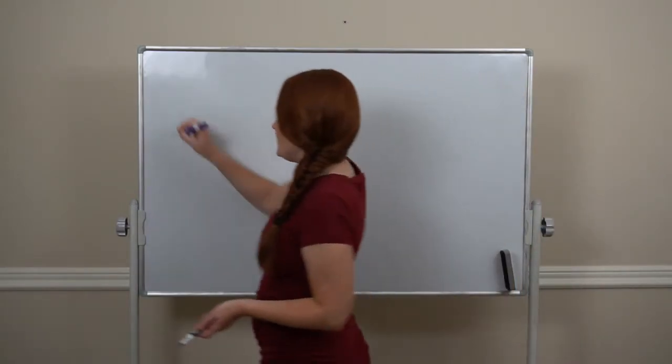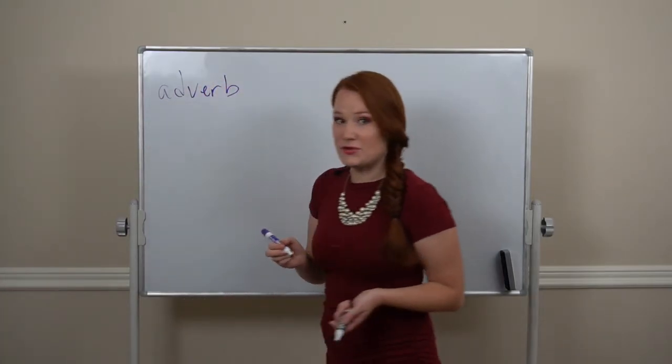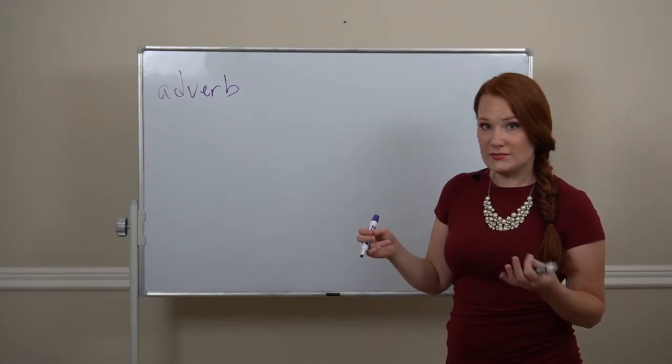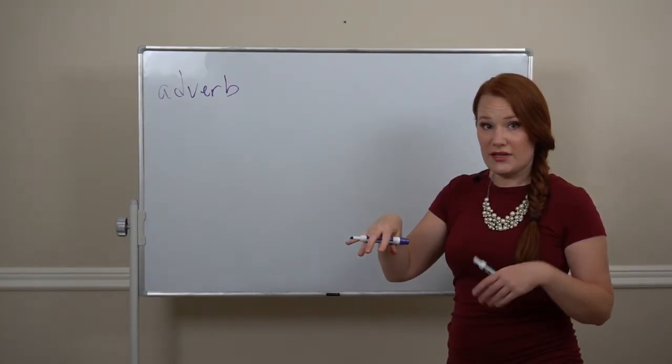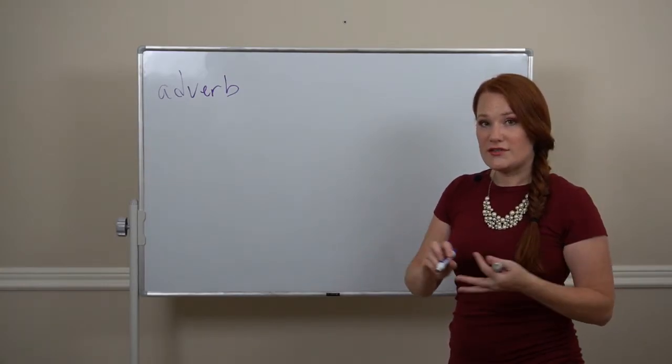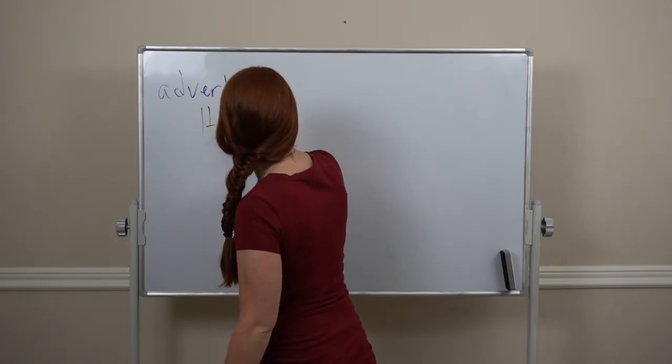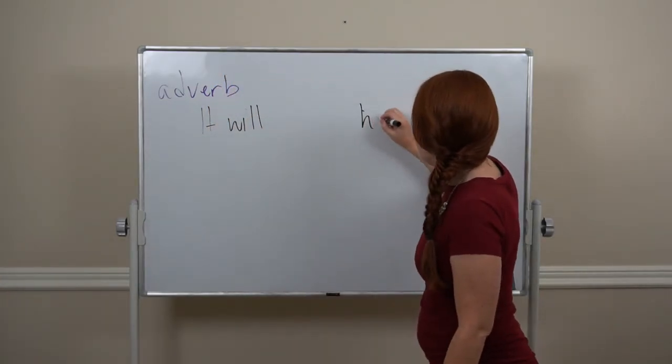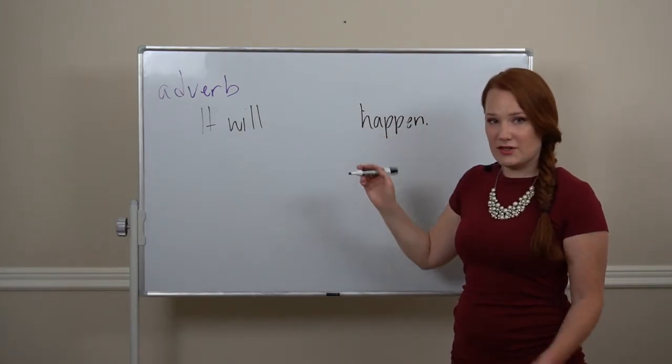We can use an adverb to express probability. We're talking about the future, so we'll use will. And our adverb will go between the auxiliary, will, and our main verb. So if we take the sentence, it will happen. Will, auxiliary verb, happen, main verb.